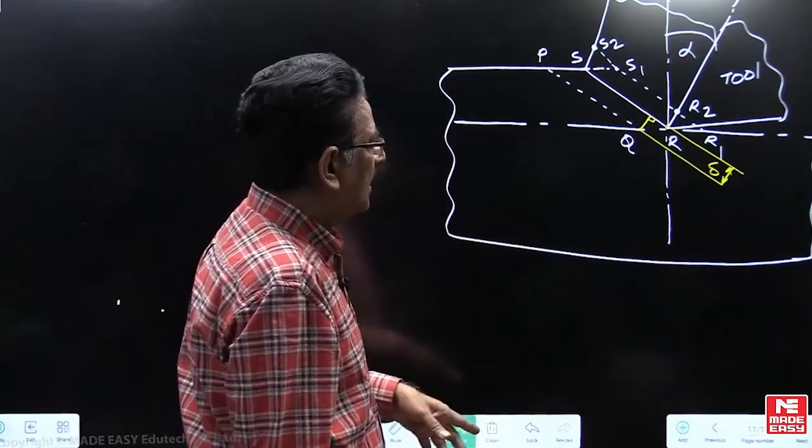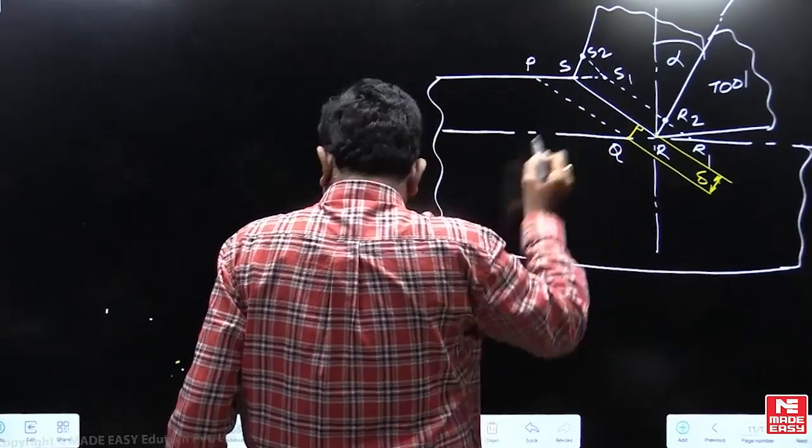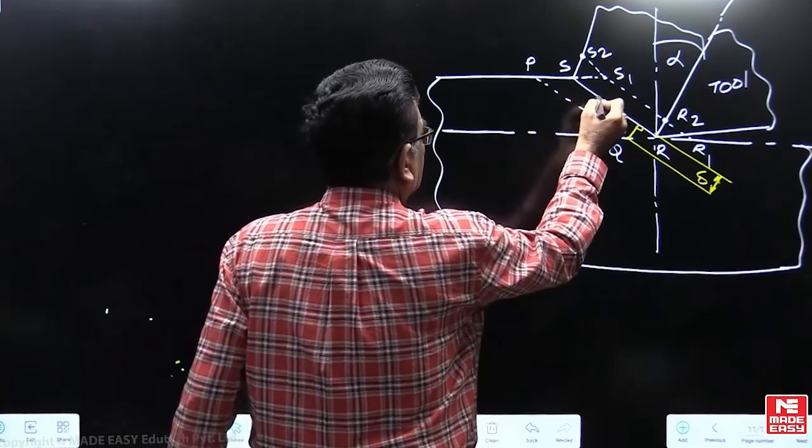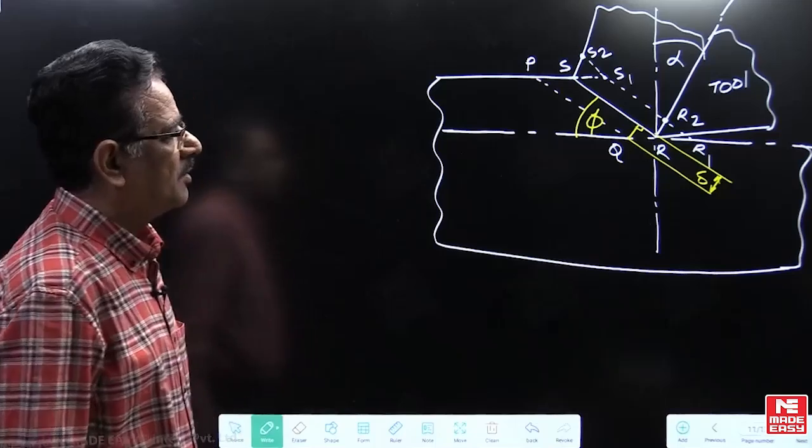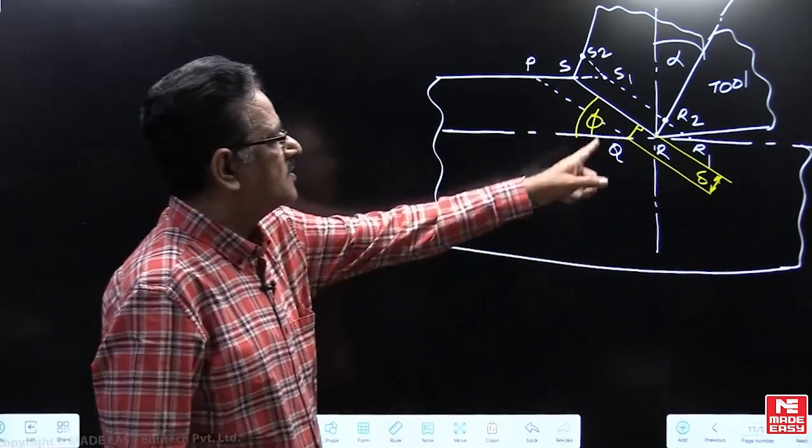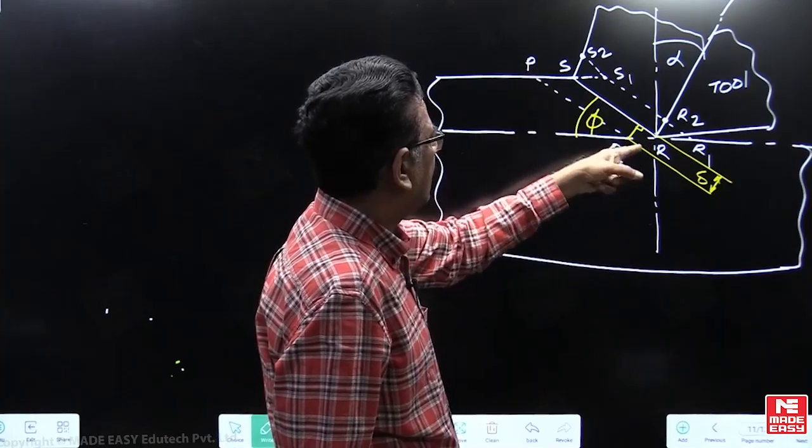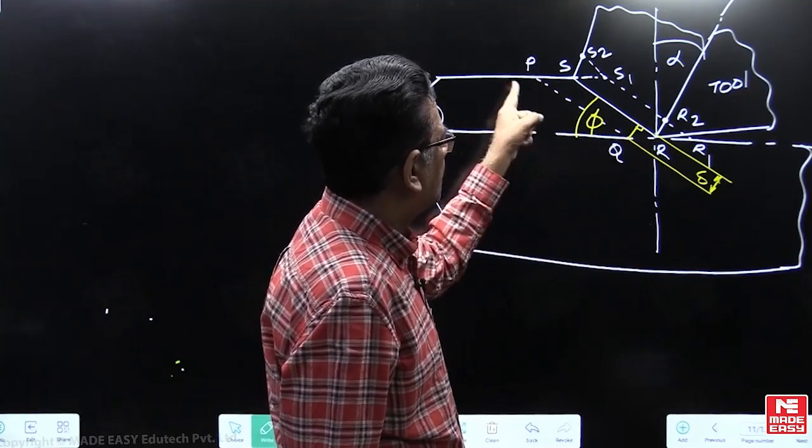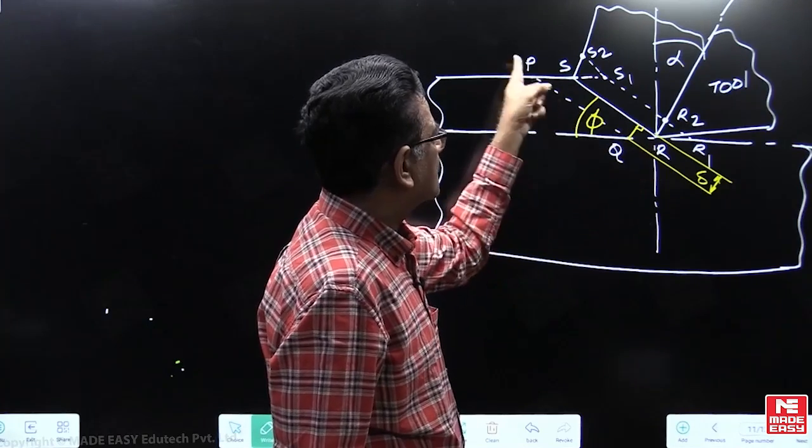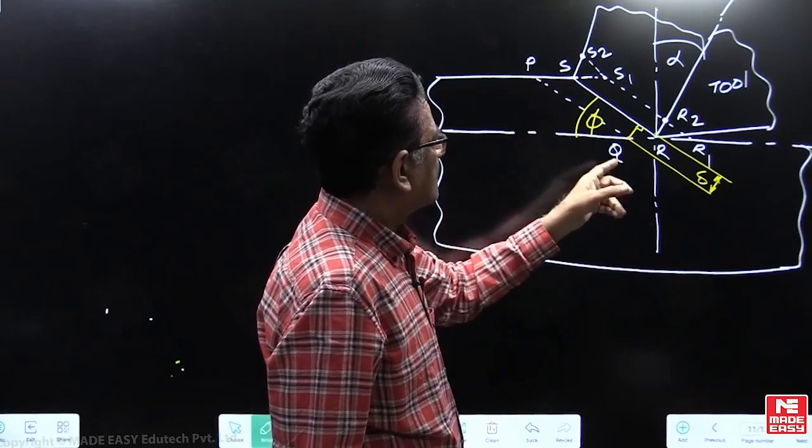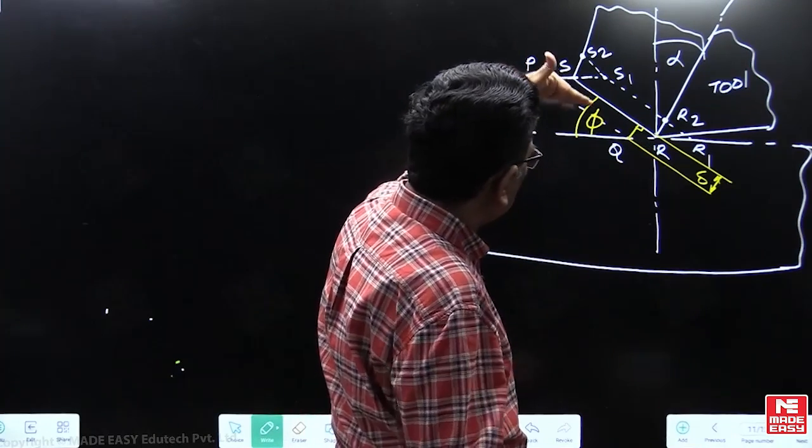We know what is the shear angle. The shear angle is represented here, given in the problem as 45 degrees. Alpha is the rake angle. PQ and RS are defining the elemental chip, and RS is called as the shear plane.